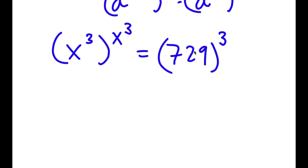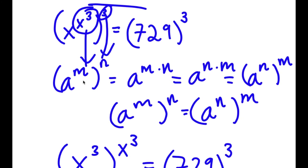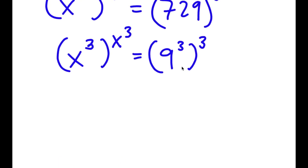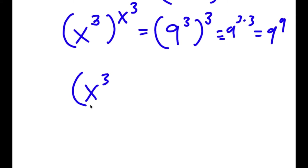Now, 729 is the same thing as 9 to the power of 3. So I have x to the power of 3 to the power of x to the power of 3 is equal to 9 to the power of 3 to the power of 3. And since a to the power of m to the power of n equals a to the power of m times n, 9 to the power of 3 to the power of 3 equals 9 to the power of 9. So I have x to the power of 3 to the power of x to the power of 3 equals 9 to the power of 9.